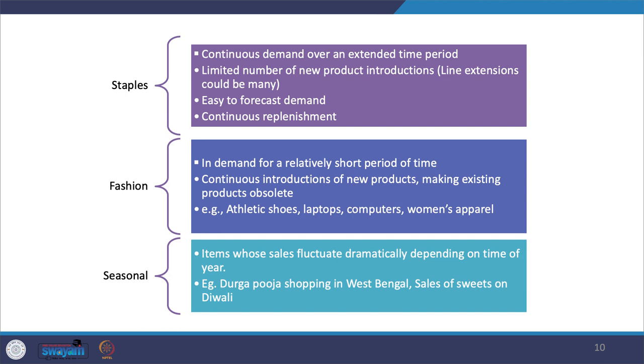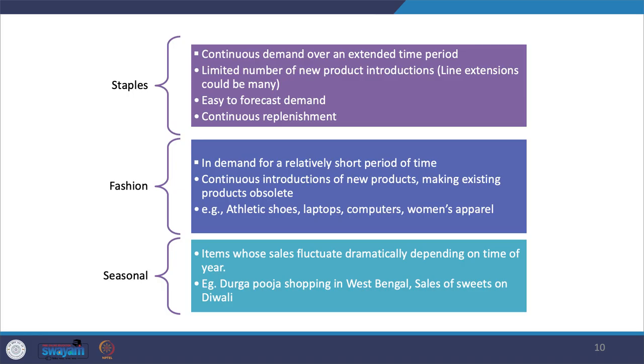Product categories to consider in fashion merchandise include laptops, computers, women's apparel, and athletic shoes — which might change with shifting consumer preferences. Because of all these complexities, it is also difficult to forecast demand for fashion merchandise.